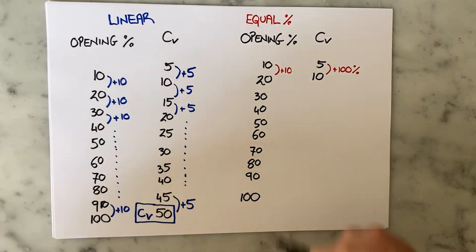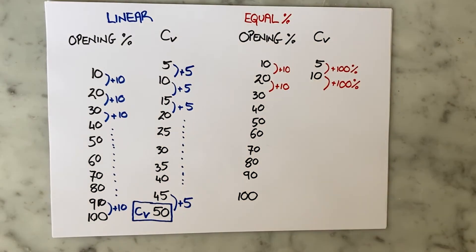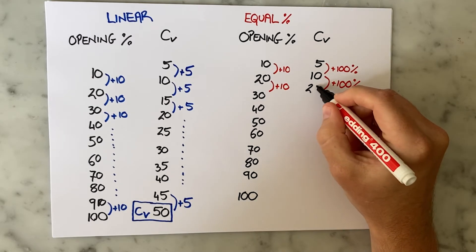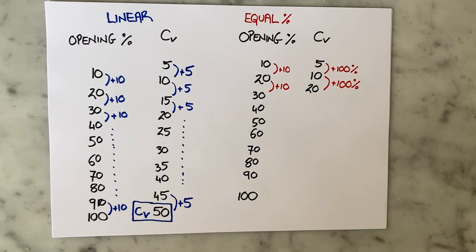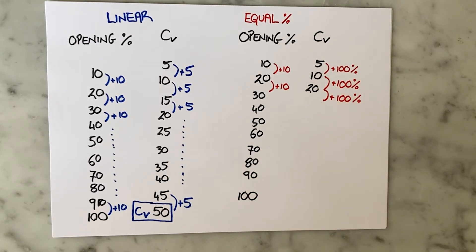In other words, I added an extra 100% of the CV for 10% opening. If I open to 30% I need to add another 100% of the CV, which means at 30% the CV goes up to 20. At 40% opening the CV goes up another 100%, this time to 40.